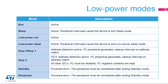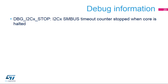The I2C peripheral is active in run, low power run, sleep, and low power sleep modes. I2C interrupts cause the device to exit sleep or low power sleep modes. Address detection is active in stop modes, and the I2C peripheral generates a wake-up interrupt in the event of an address match. In standby and shutdown modes, the peripheral is powered down and must be reinitialized after exiting those modes. For each I2C peripheral, a bit is available for debugging purposes in the MCU debug component that can be used to stop the SMBus timeout counter when the core is halted.